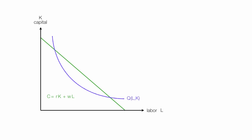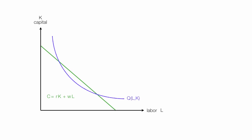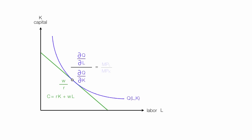The producer could produce anywhere along the isoquant line for a given level of production, but the producer is constrained by cost. They want to minimize cost and stay on that blue line. Obviously, it's going to be where the cost line — the green line — is tangent to the isoquant line, the blue line, at that point. This is where all the slopes are equal, and this is what the final solution looks like.